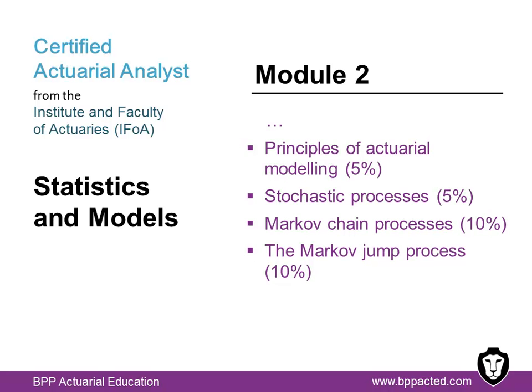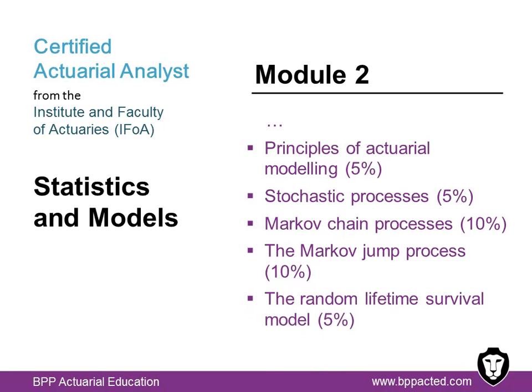The Markov jump process, where you'll state the features and define models for simple cases such as the two-state survival model. And finally, the random lifetime survival model — you'll both define this and the symbols used to calculate probabilities of survival and the mean future lifetime of an individual.